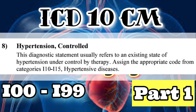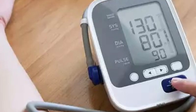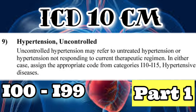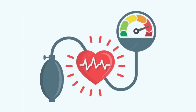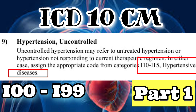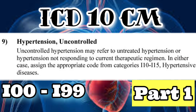The eighth point: controlled hypertension — the patient is an established hypertensive patient, but due to treatment, medication, or lifestyle changes, the blood pressure is under control. Code this using the hypertensive disease codes I10 to I15 series only. The ninth point: uncontrolled hypertension — either the patient's hypertension is untreated or the treatment is not controlling it. In either case, still code from I10 to I15, as the patient remains an established hypertensive.